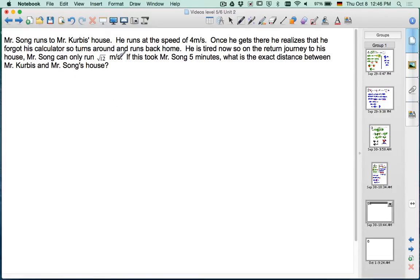Mr. Song runs to Mr. Kervis's house. He runs at the speed of 4 meters per second. Once he gets there, he realizes that he forgot his calculator, so he turns around and runs back home. He's tired now, so on the return journey to his house, Mr. Song can only run square root of 12 meters per second. If this took Mr. Song five minutes, what is the exact distance between Mr. Kervis's and Mr. Song's house?